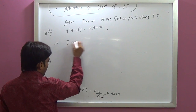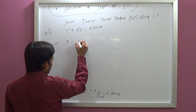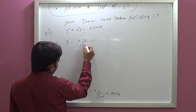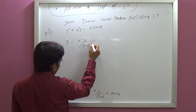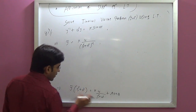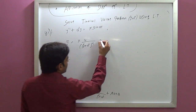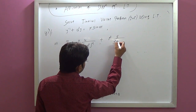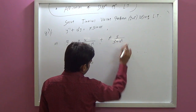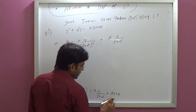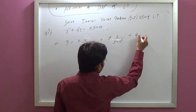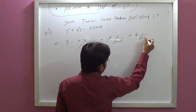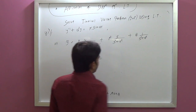Expanding Y-bar: k·a over (s-squared plus a-squared) squared, plus a times s over s-squared plus a-squared, plus b times 1 over s-squared plus a-squared.